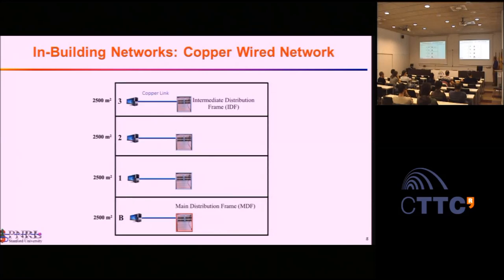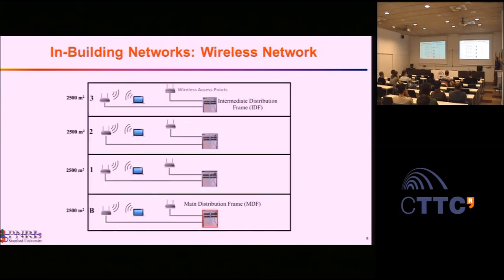The second network is a copper network operating within the limits of each floor, with no connection to the other except through MDFs and IDFs. The third is a wireless network providing wireless connectivity independent of the copper network. This wireless infrastructure is connected to IDFs and MDFs by copper today — in the future it will probably be changed to fiber. One very striking thing is that there is absolutely no relationship, no collaboration, no attempt to cross-optimize these networks with each other. They all live separately.